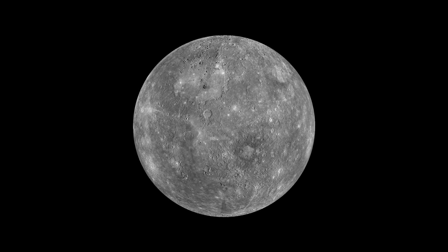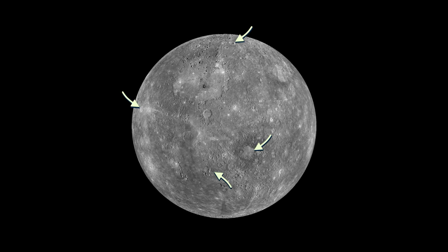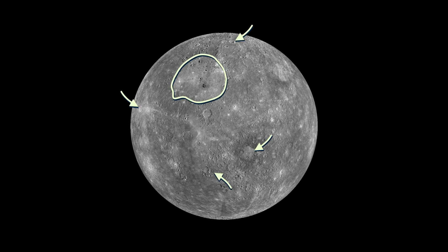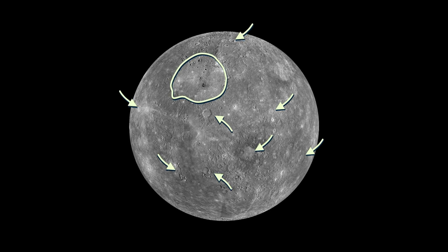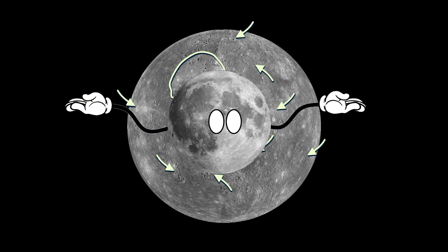Now, we have many photos of Mercury, and it's obviously covered in craters, some of which are huge, meaning there have definitely been massive impacts in Mercury's past. So why no moon?